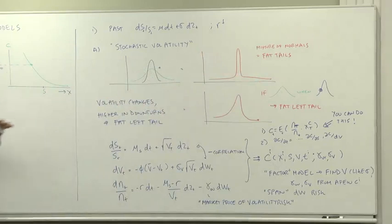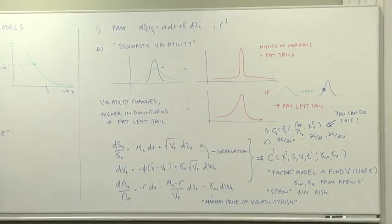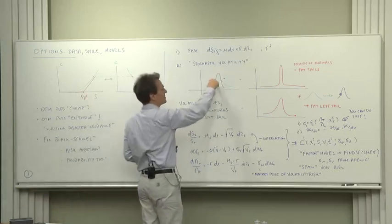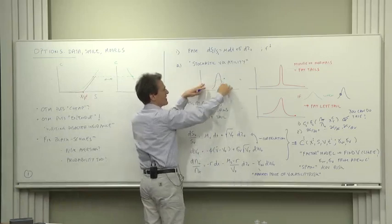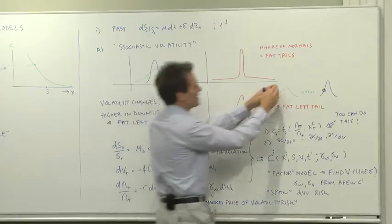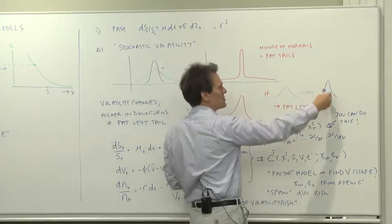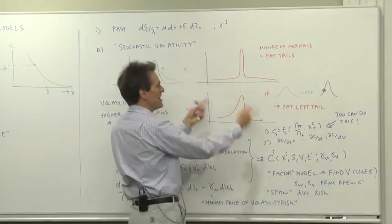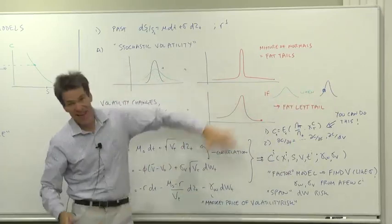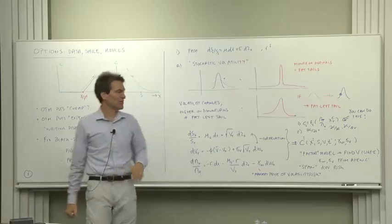Now we need not just fat tails, we need a fat left tail. So how do we do that? Well, what we do is we have the regular normal distribution, and then we shift to this fatter-tailed one in bad times. So if you're more likely to shift to a fatter-tailed distribution in bad times, then the net result will be a distribution of one period returns with this fat left tail and not so much a fat right tail.